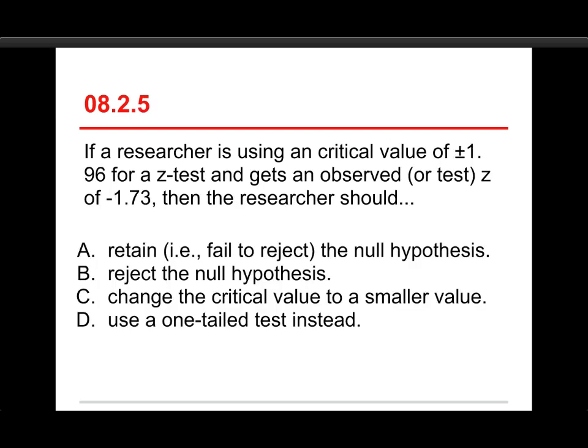Okay, last question in quiz 2. If a researcher is using a critical value of plus or minus 1.96 for a z-test, and gets an observed or test z-score of negative 0.173, then the researcher should, A, retain or fail to reject the null hypothesis, B, reject the null hypothesis, C, change the critical value to a smaller value, or D, use a one-tail test instead. The answer here is retain or fail to reject the null hypothesis. And let's look at our exact same picture here.